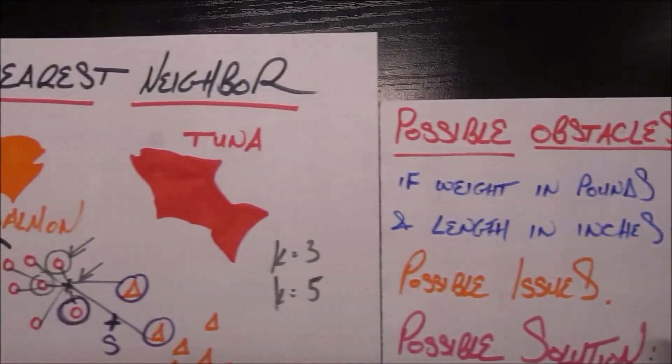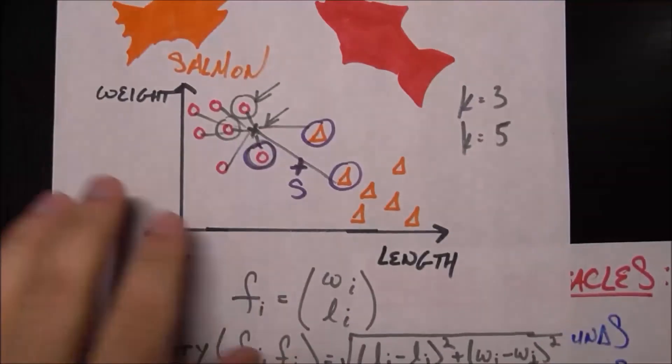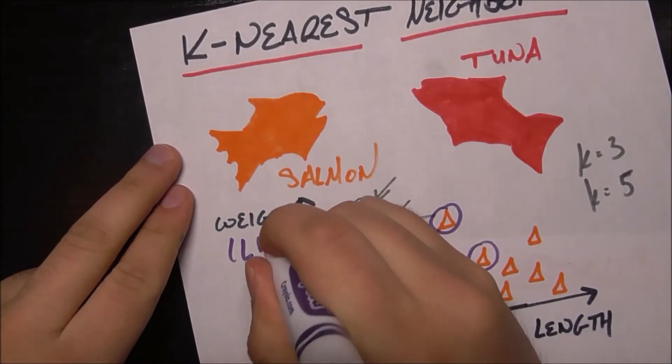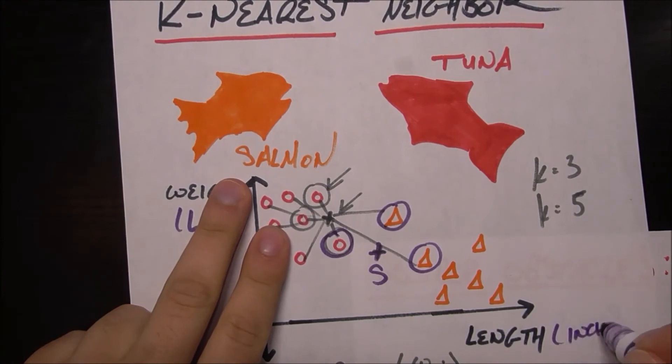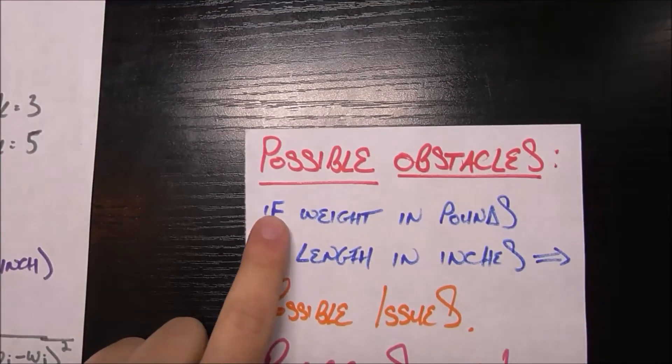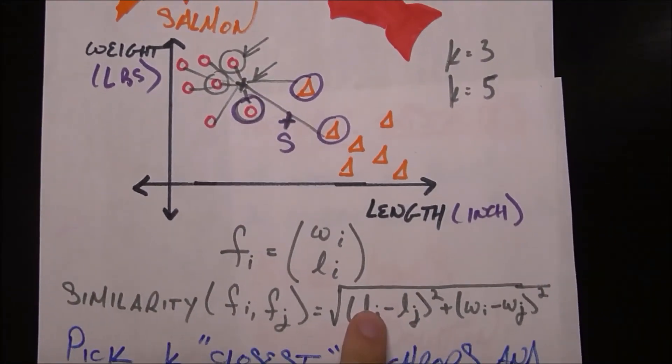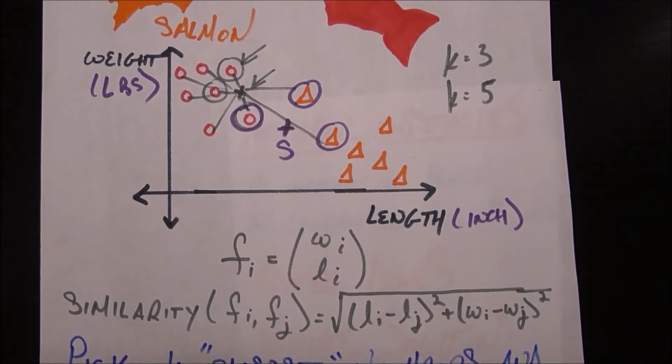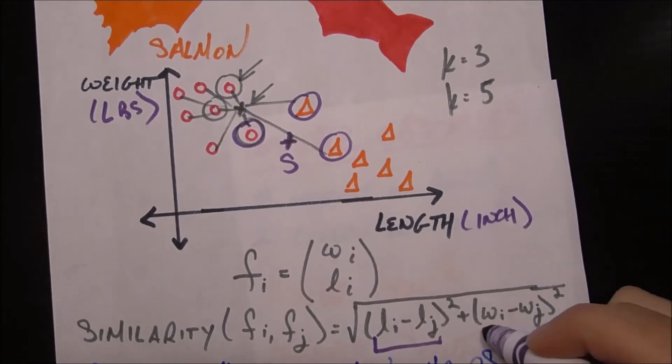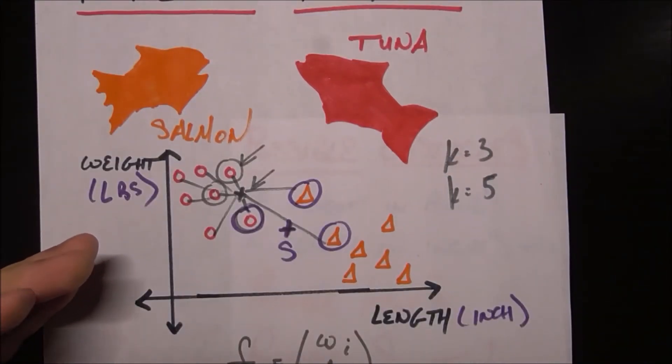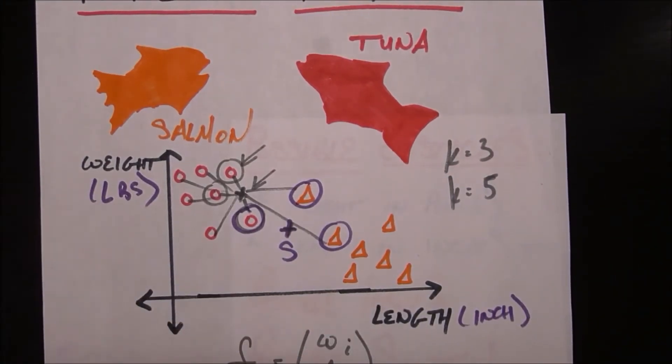Before closing out this video, I do want to talk about some possible obstacles you have. Here I didn't do this in a very careful way because weight could be in any type of units—it could be in pounds, for example. Length could be in any units, inches or millimeters or feet or whatever. If weight is in pounds and length is in inches and all I'm doing is just this subtraction of lengths and subtraction of weights, I'm basically implicitly saying that a one unit difference in lengths is the same thing as a one unit difference in weight, but a one pound difference may not be as drastic or could be more drastic than a one inch difference or a one foot difference.